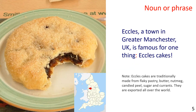Next: Noun or Phrase. Eccles, a town in Greater Manchester, UK, is famous for one thing: Eccles Cakes. Note: Eccles Cakes are traditionally made from flaky pastry, butter, nutmeg, candied peel, sugar, and currants. They are exported all over the world.